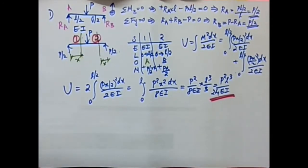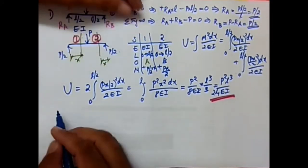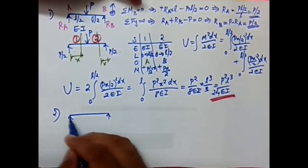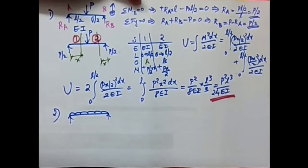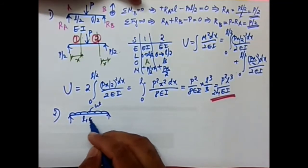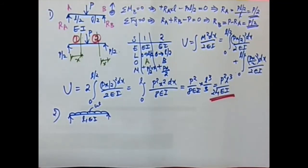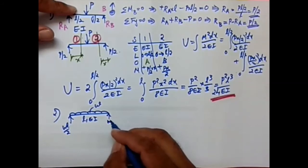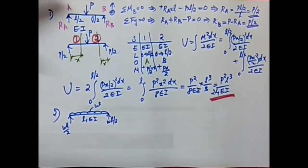Now let's consider Case 2: a simply supported beam acted upon by a uniformly distributed load (UDL) over the entire span, let it be W per unit length, with constant EI. We need to calculate the reactions first.